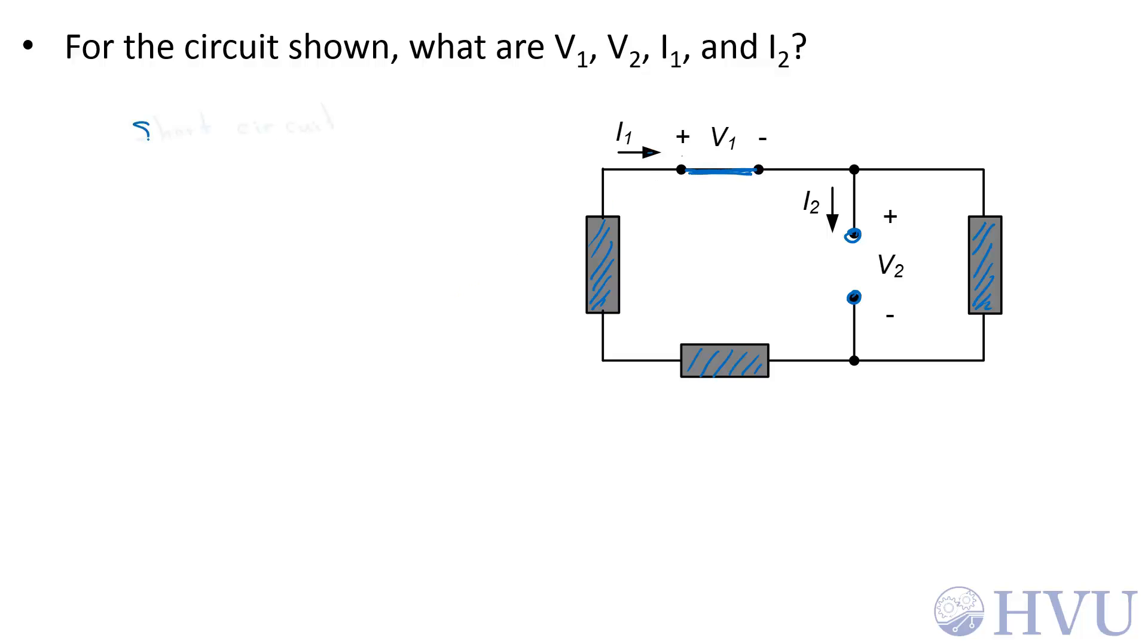For this short circuit element, we know that the voltage difference across a short circuit is always zero, so V1 is equal to zero volts.